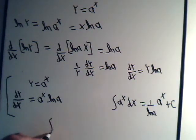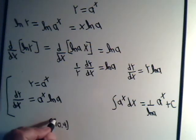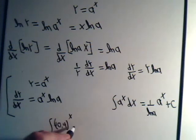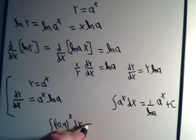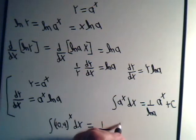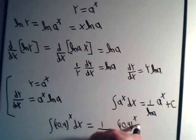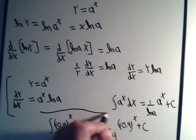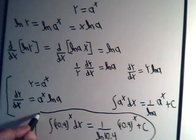So we go back to our original integral. That was 10.4 to the x dx. And so that would just equal 1 over the natural log of 10.4 times 10.4 to the x plus an arbitrary constant. And there it is.